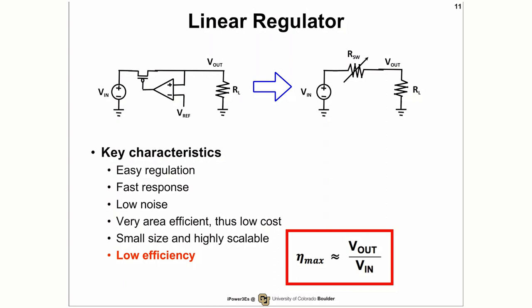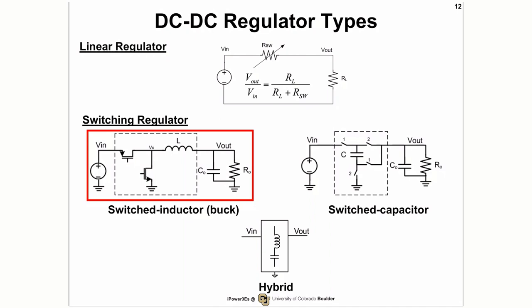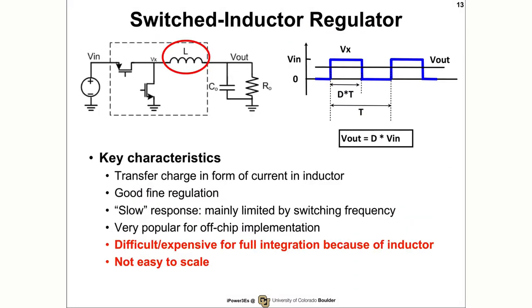However, the linear regulator has one key drawback: its efficiency is limited by the ratio between the output and the input. So we turn to switching regulators, which ideally can reach up to 100% efficiency. There are three main types of switching regulators, including the switch inductor, switch capacitor, and the hybrid converter that combines the benefits of both. The switch inductor — as in the buck converter example — is composed of two switches at the input, an inductor, and output capacitors. This converter transfers charge from the input to output in the form of current in the inductor, providing efficient fine voltage regulation. However, it has a slower response compared with the linear regulator because it is mainly limited by the switching frequency. It's very popular for off-chip implementation, but it's very difficult to integrate the inductor and not easy to scale in the integrated context.